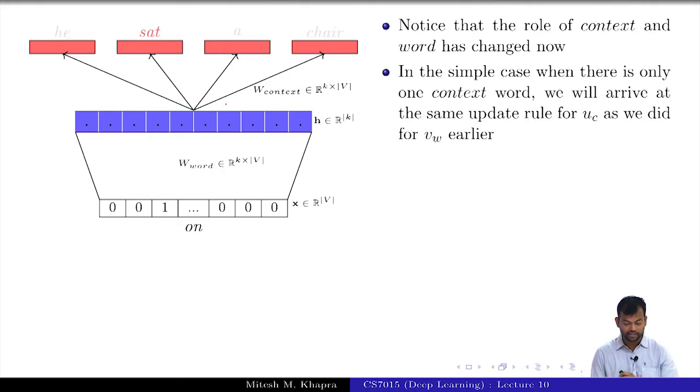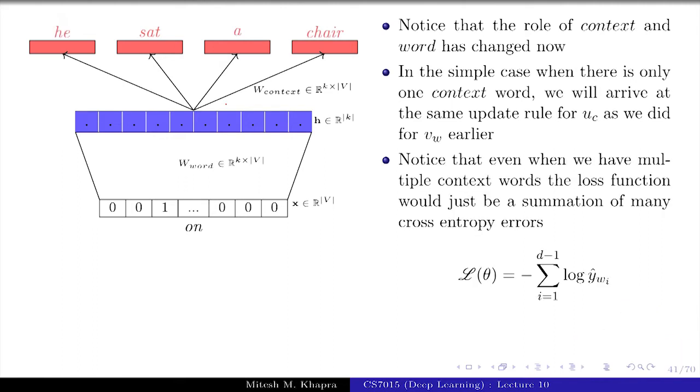Notice that the role of context and word has changed now. In the simple case when you are trying to take one word as the input and only predict one word around it, it just becomes the same as the first case that we saw in the continuous bag of words. There is no difference there, because there also you take one word and predict the other word, right? The entire math remains the same. And even when we have multiple context words, our loss function would just be a summation of many cross entropy errors. The loss function is just going to be the sum of the cross entropies for all those d predictions that I need to make, or d minus 1 predictions that I need to make.